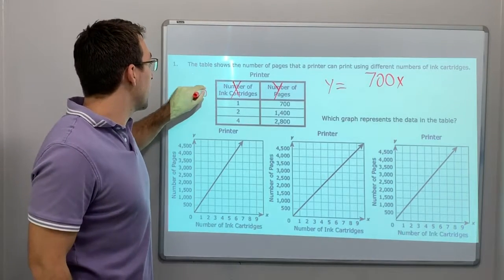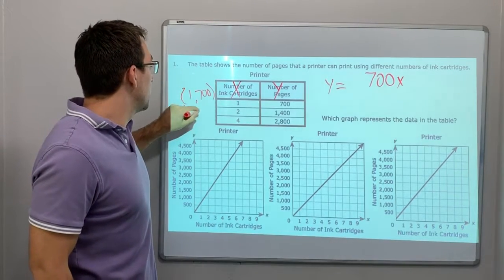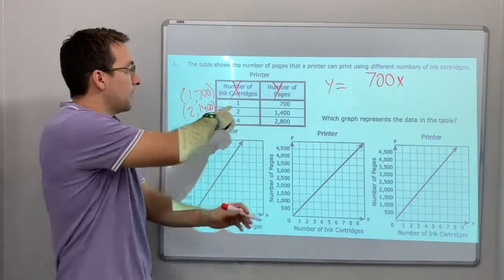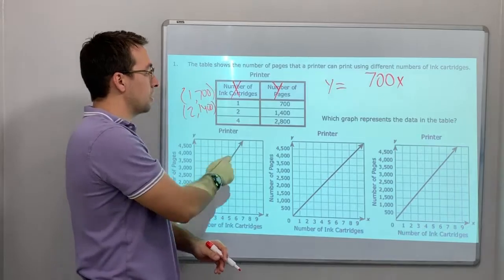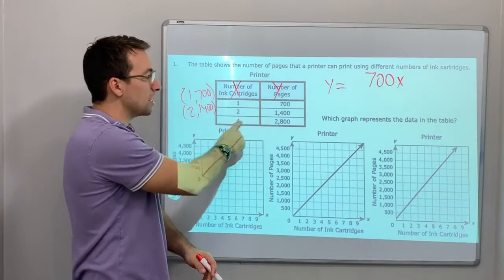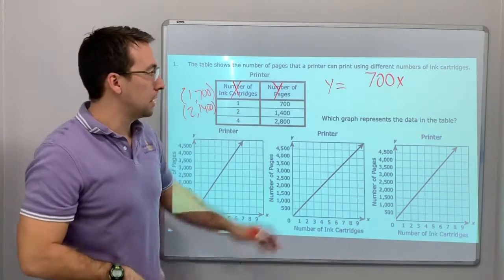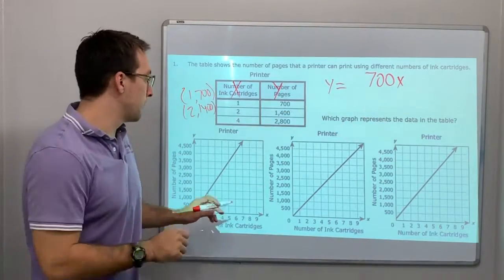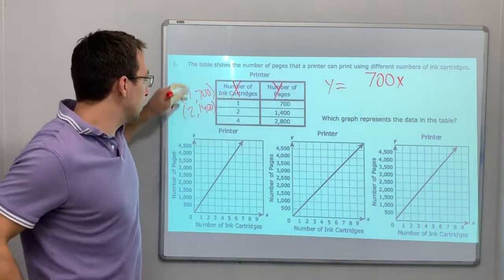This is cool. So, 1, 700. 2, 1400. 3. And notice, it's just if I multiply 1 times 700, I get 700. 2 times 700 is 1,400. 4 times 700, 2,800. That's a different teak, but it's cool. I want to show you that it works together.